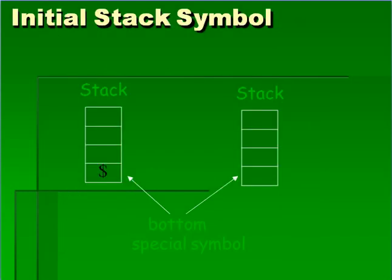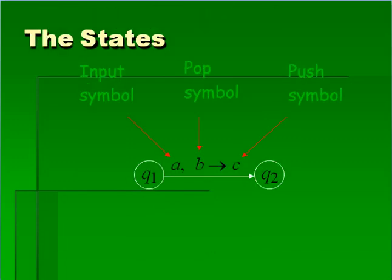Initial stack symbol is represented as dollar symbol or null. In the states, the given transition q1 and q2 are the following states, where q2 is followed after q1. a is used for the input symbol, b for pop symbol, and c for push symbol.